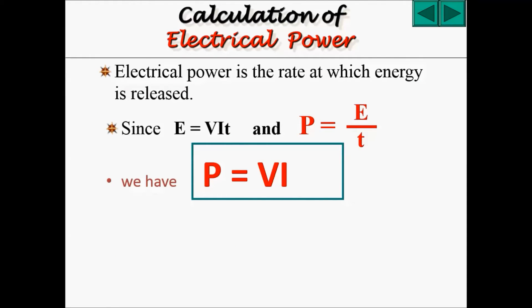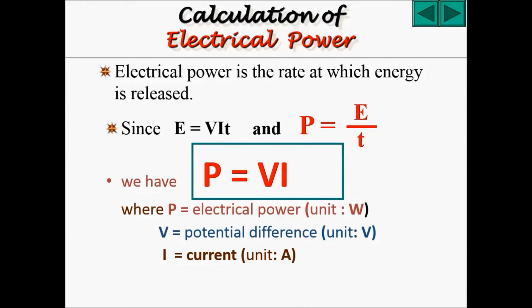Next, we can calculate electrical power. Electrical power is the rate at which energy is released or dissipated. Since E equals to VIT, and P equals to energy over time, E over T. Solving E into the equation, you should be able to get P equals to VI, where P is the electrical power, V is the potential difference, and I is the current.